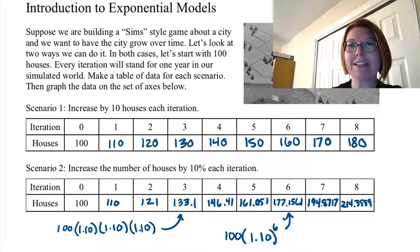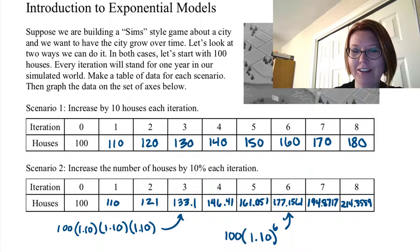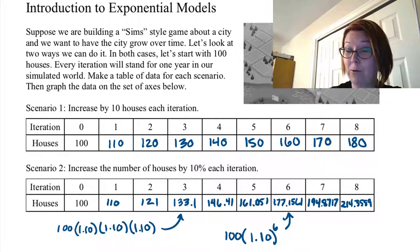If we go through this process of doing all the multiplication, for the fourth iteration we'll have 146.41 houses. For the fifth iteration we'll have 161.051 houses. For the sixth iteration, 177.1561 houses.